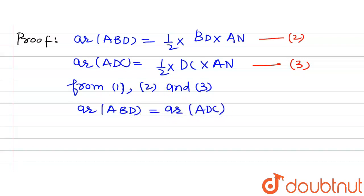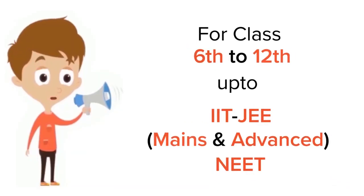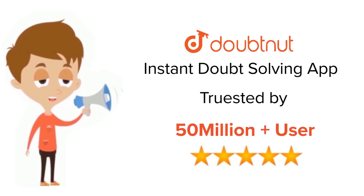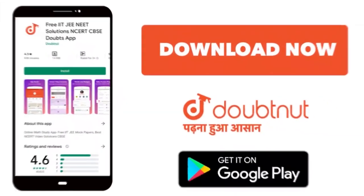area ABD equals area ADC, which is what we were required to prove. Hence proved. Thank you. For Class 6 to 12, JEE and NEET level, trusted by more than 5 crore students. Download Doubtnet today.